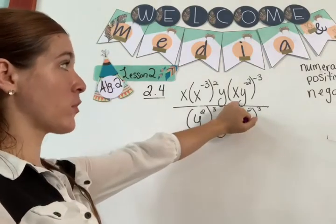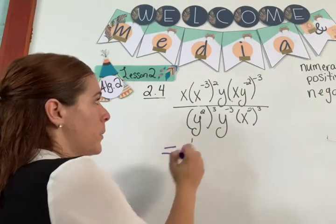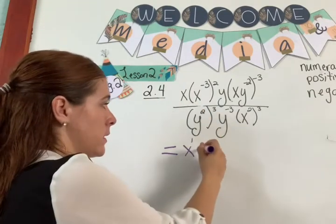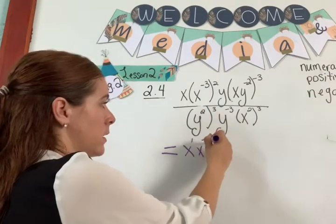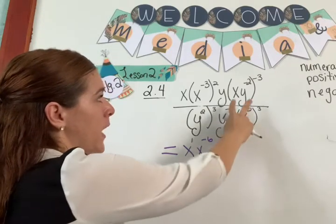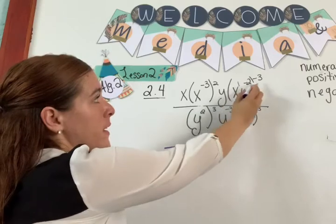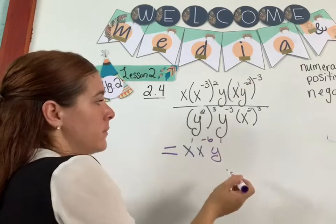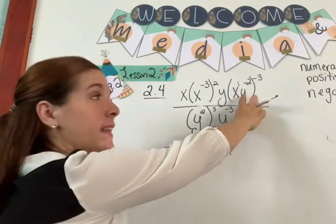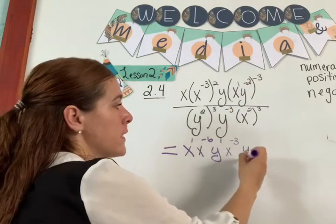I'm going to show you what happens when there are two terms in parentheses. You have x to the 1 — I'm putting that there because it's invisible — x to the negative 6, and y to the 1. Now you have two things in parentheses. This is an invisible 1. So x to the 1 times negative 3 gives you x to the negative 3. y to the negative 2 times negative 3 gives you y to the 6.